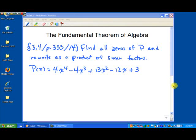Now we want to take a look at the idea of the fundamental theorem of algebra and how we can apply that. Let's take a look at this example here in section 3.4, page 333, number 14. Let's find all zeros of P and rewrite P as the product of linear factors. That's what the fundamental theorem of algebra allows us to do, to take any nth degree polynomial function and write it as a sequence of n linear factors.